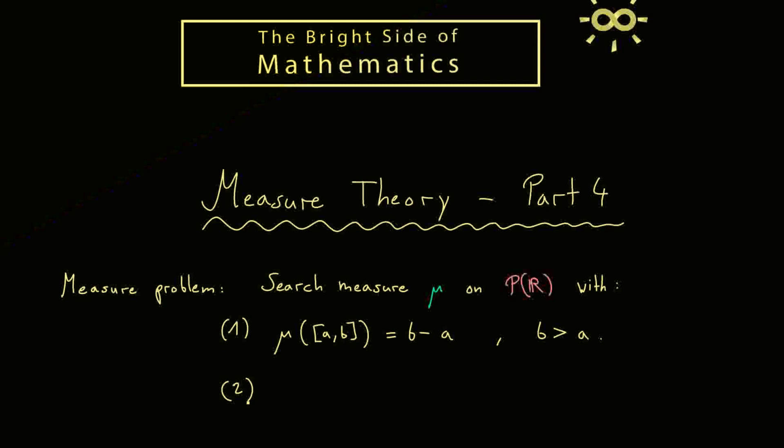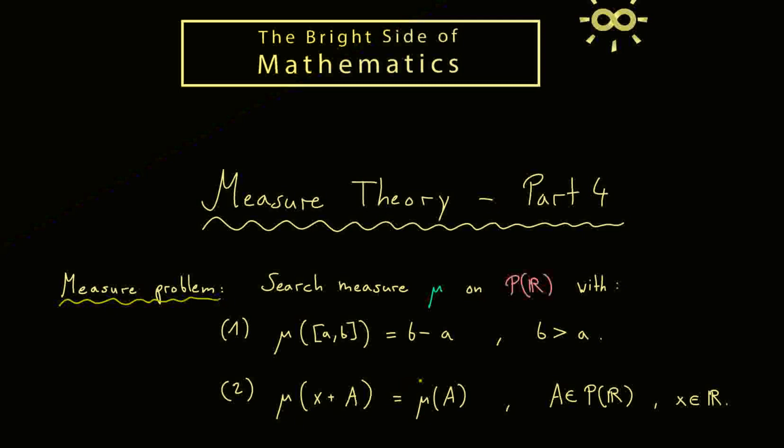The second natural property is that we have translation invariance. This means that if we have a set A and shift it by a fixed vector x, we don't change the length or the measure of this set — we get out mu of A on the right-hand side. And that is what we call our measure problem. Such a measure mu would truly generalize the length measure of intervals.